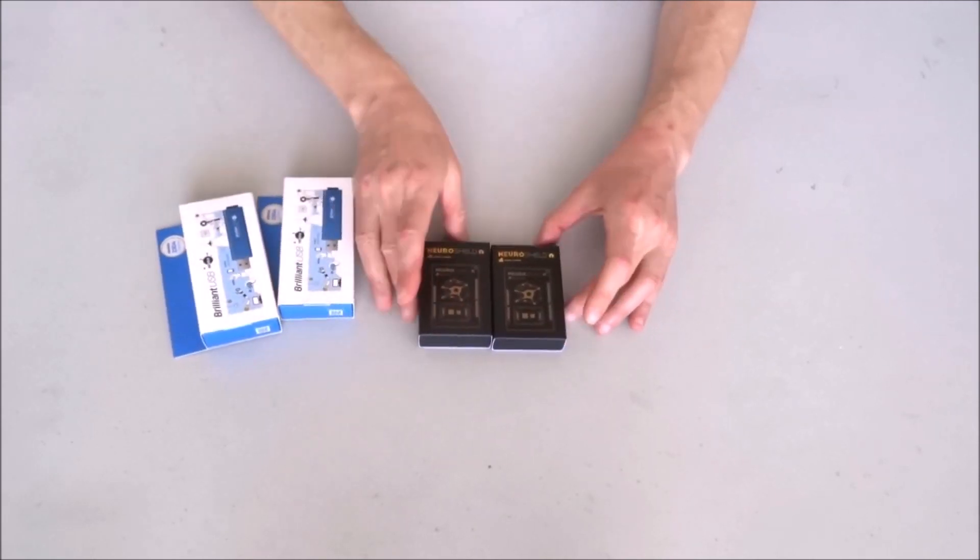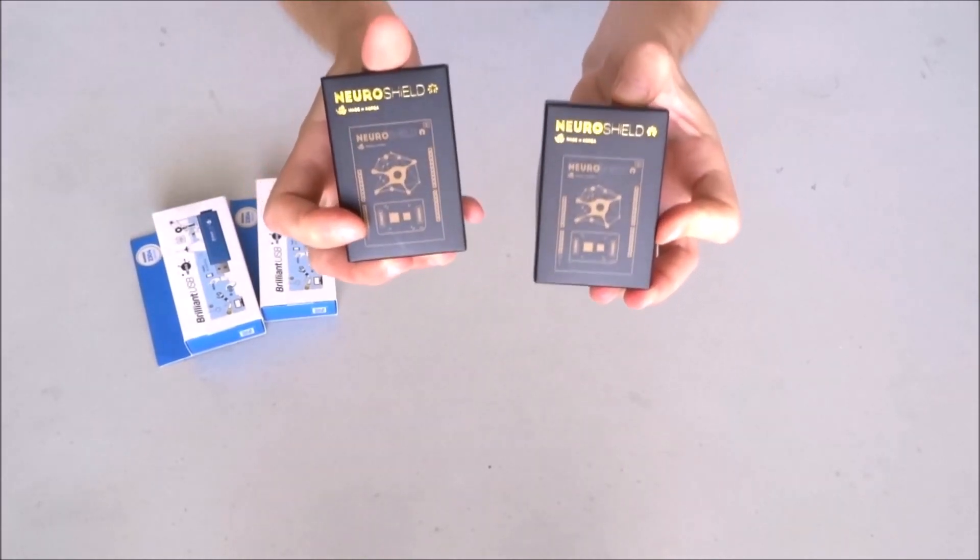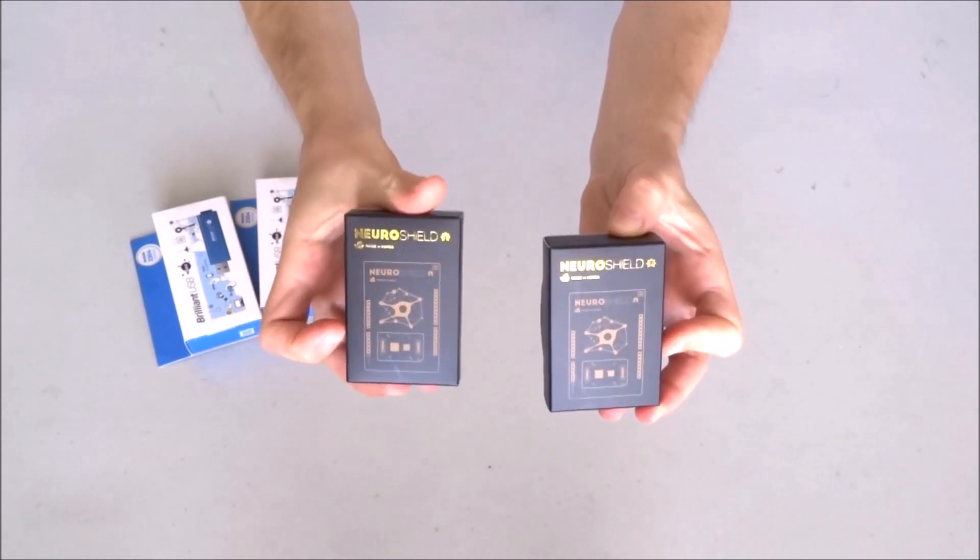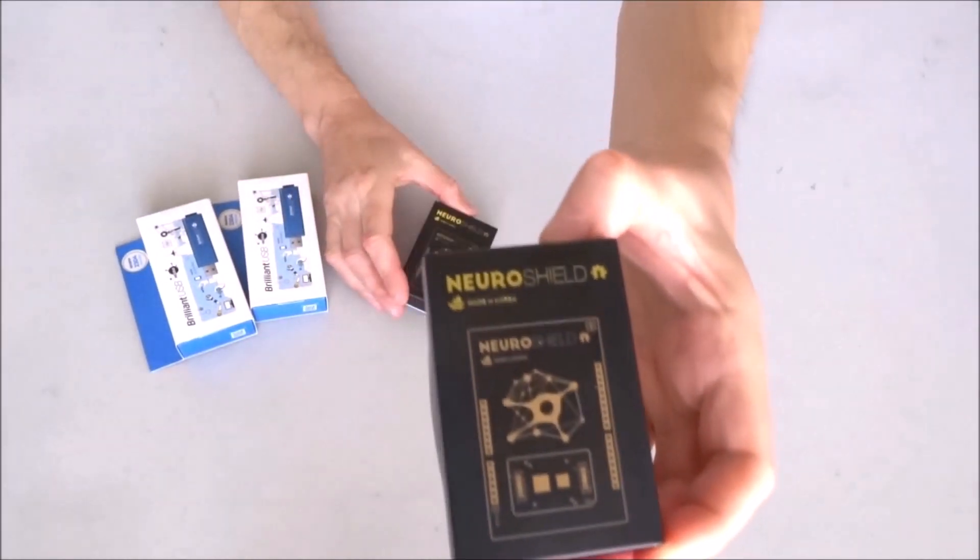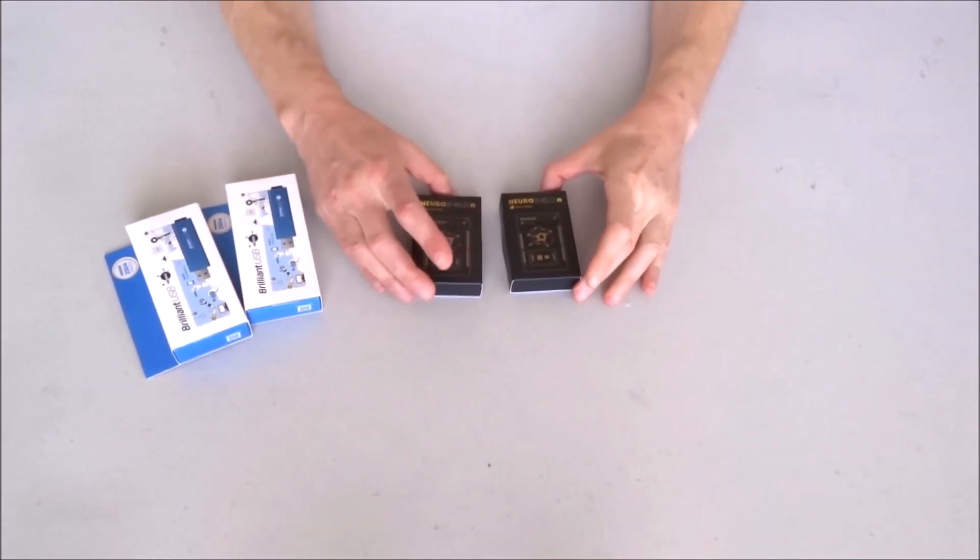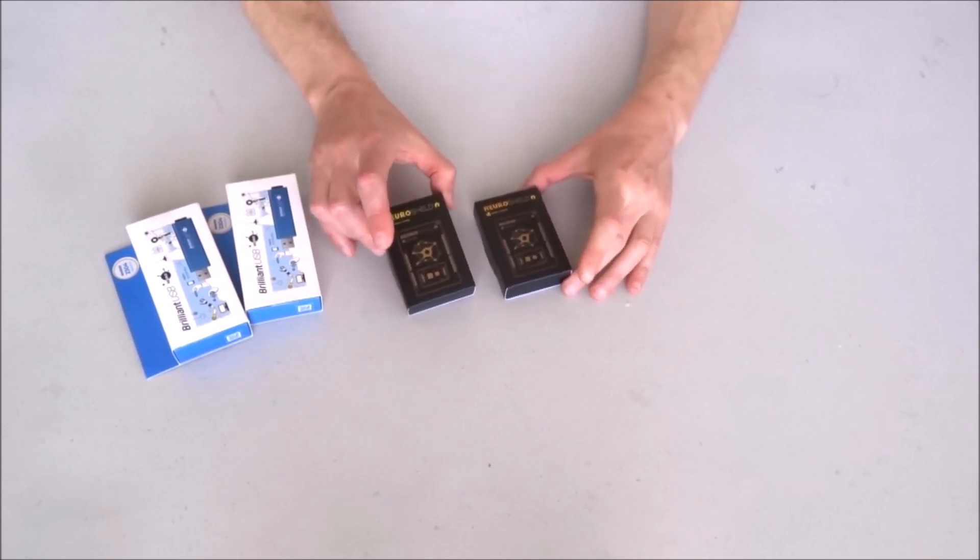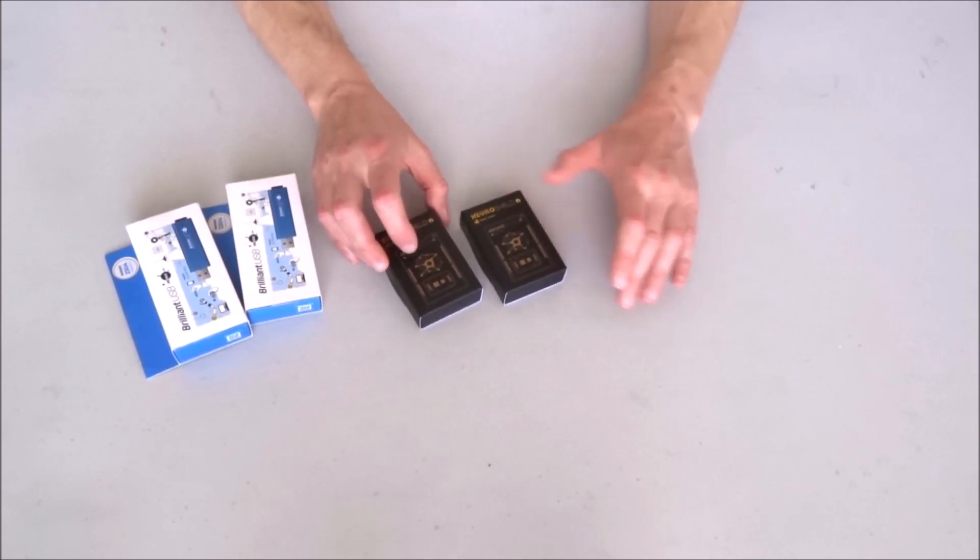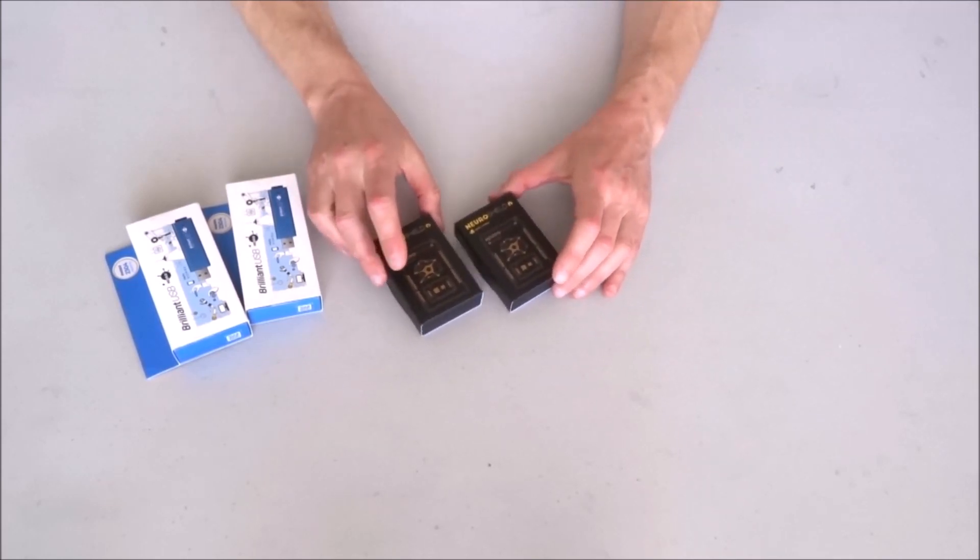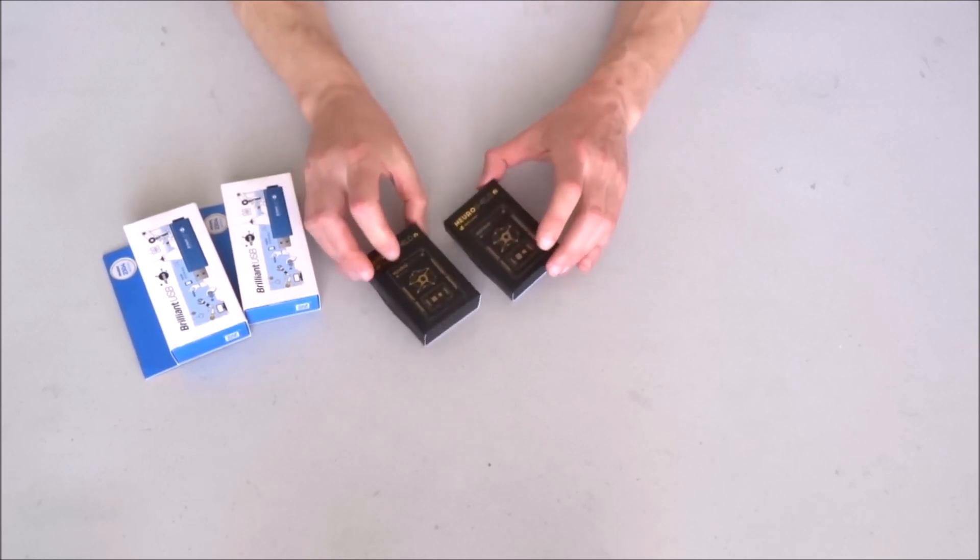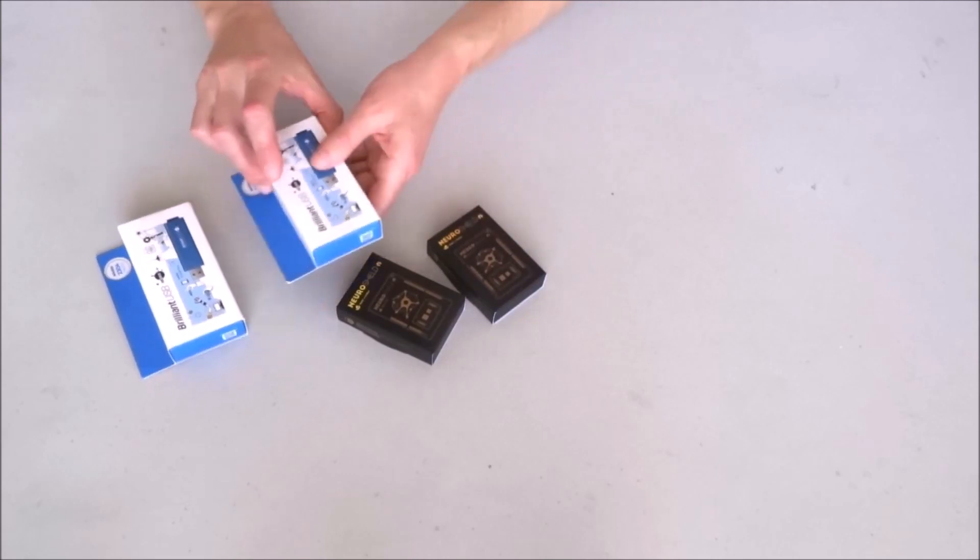We have two neural shields. The neural shield has just been added to the latest versions of Visuino and it's a really cool shield that adds over 1700 neurons.